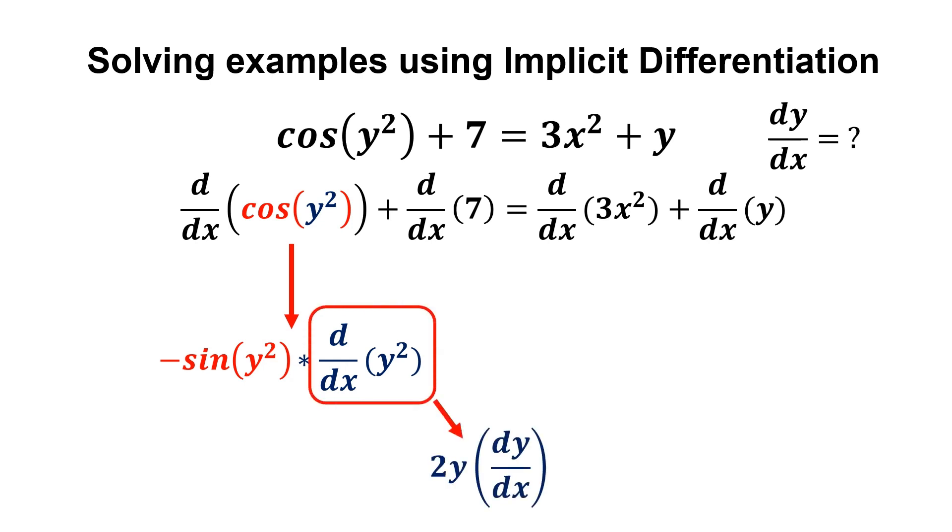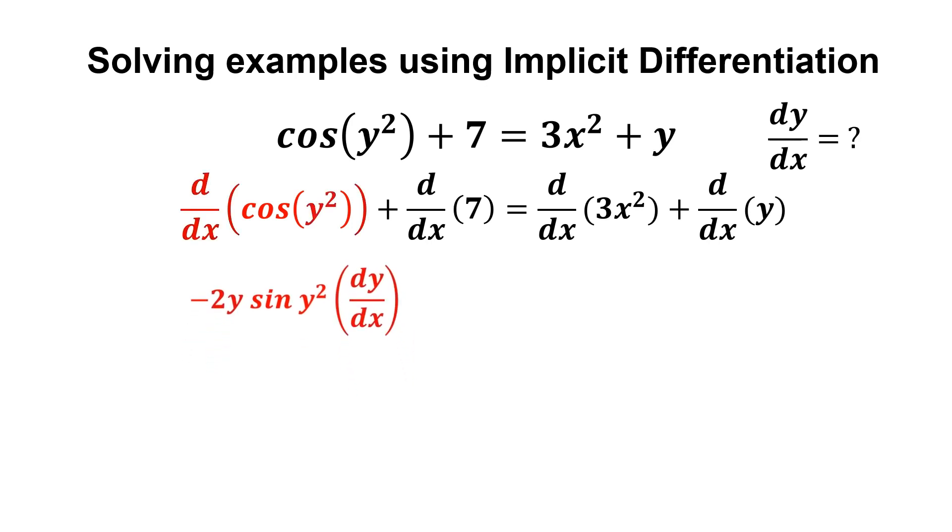Taking the derivative of y², we get 2y multiplied with dy/dx. Differentiate a constant, we get 0. Differentiate 3x², we get 6x. Lastly, differentiate y with respect to x, we get 1 multiplied by dy/dx.